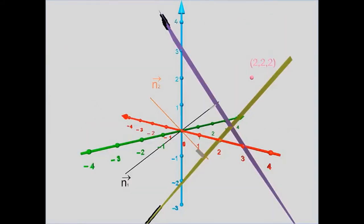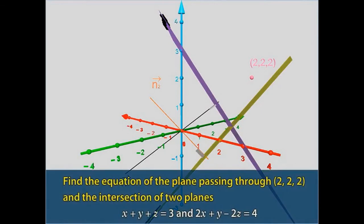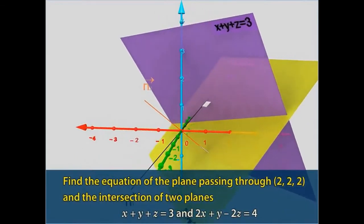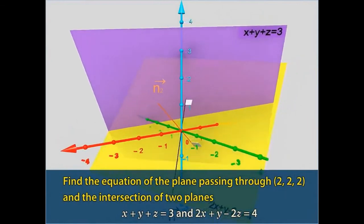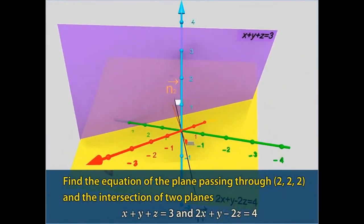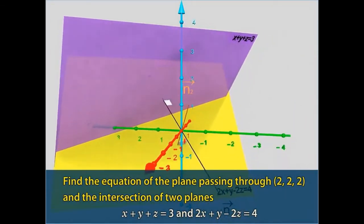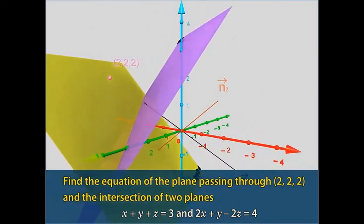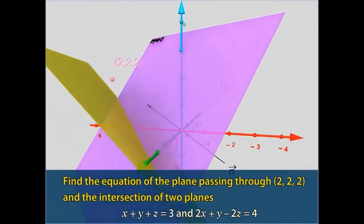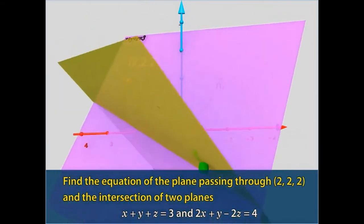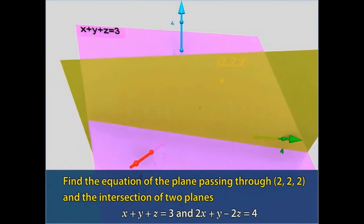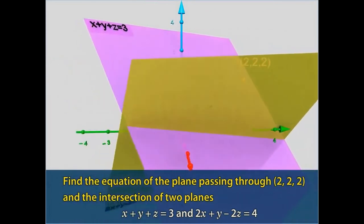Example: Find an equation of a plane passing through point 2 cap i plus 2 cap j plus 2 cap k and the intersection of two planes x plus y plus z equals 3 and 2x plus y minus 2z equals 4.